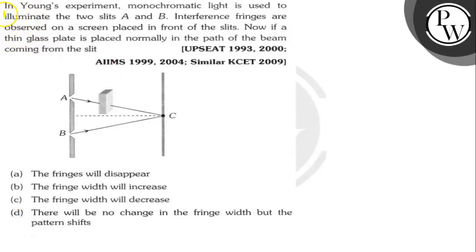Hello Bacho. Let's read the question. The question says here, in Young's experiment, monochromatic light is used to illuminate the two slits A and B. Interference fringes are observed on a screen placed in front of the slits. Now, if a thin glass plate is placed normally in the path of the beam coming from the slit, what happens?